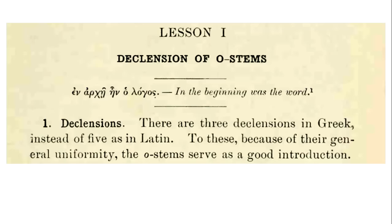We also have some diphthongs, which represent the union of two vowels in one syllable. They actually sound about the way you would expect, similar to the diphthongs within English. The first is 'ai' like in 'isle,' the second is 'ei' like in 'freight,' then 'oi' as in 'toil,' then 'ui' comparable to the French word for yes, then 'au' like in 'cow,' then 'eu,' then 'eu' with a slightly different e, and finally 'ou' as in 'group.'